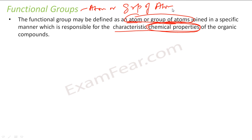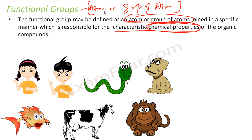Before we understand this from the chemistry point of view, let me give you a real life example. God has made these creatures — boy, girl, snakes, dogs, monkeys, cows, fish. All these have unique characteristics. They are all living beings.